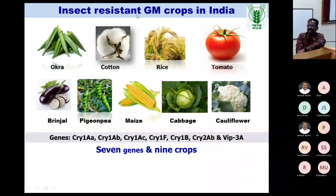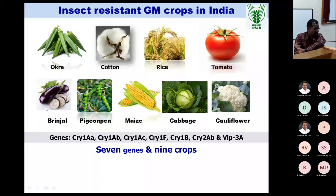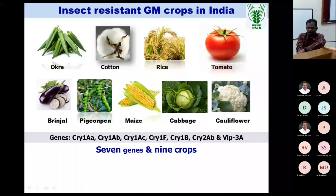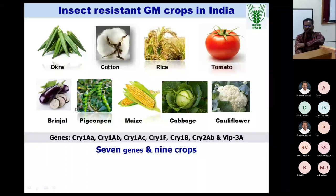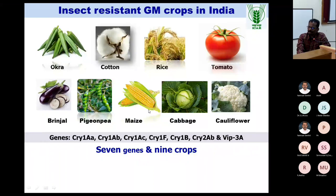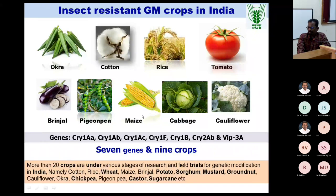These are all the insect-resistant GM crops in India — permitted for trials only, not commercial cultivation. Cotton is successful. Okra and brinjal are also tested; brinjal was approved but not permitted in India because it has specific phenolic pigments that some people are allergic to. More than 20 crops are under various stages of trials.